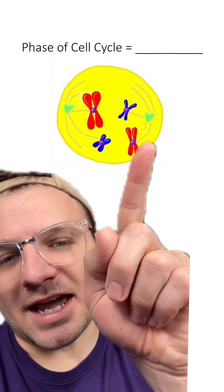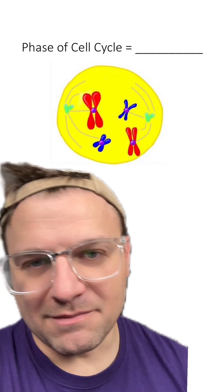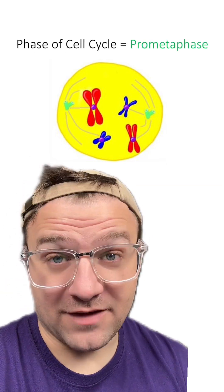And here's our last cell. You can see the chromosomes have condensed. They're attached to the spindle fibers, but they're not in the middle of the cell. This cell is in prometaphase.